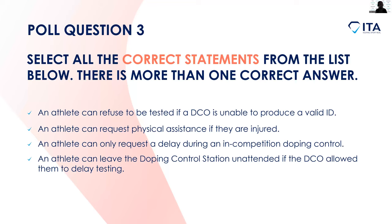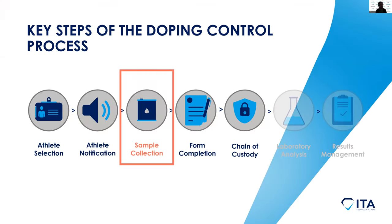To cover another common question: what if I can't pee immediately? The answer is that is absolutely fine — the doping control officer will wait for you as long as needed. OK, let's move now to step three, which is the sample collection process.